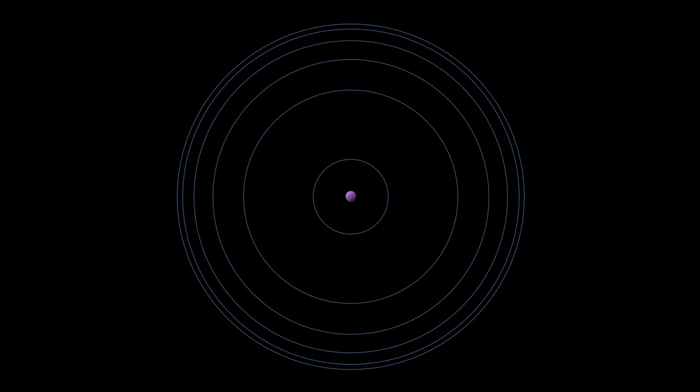But Bohr said no, that would not happen. In his model, energy could be absorbed by an electron, putting it in a higher energy orbit, and the electron would only then emit light energy when the energized electron transitioned from a higher to lower energy.